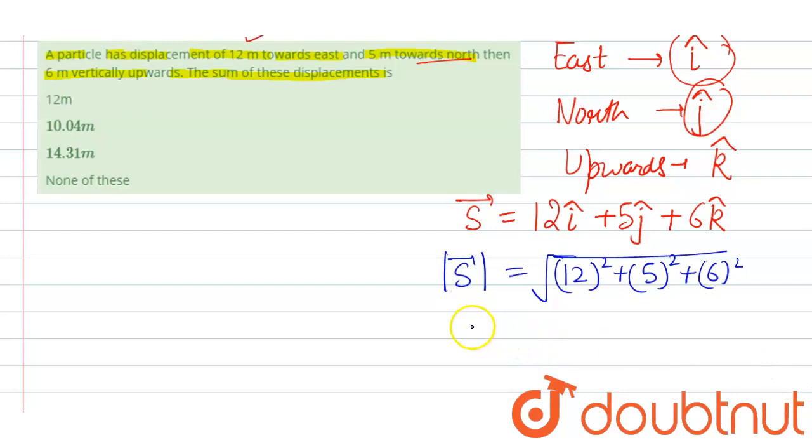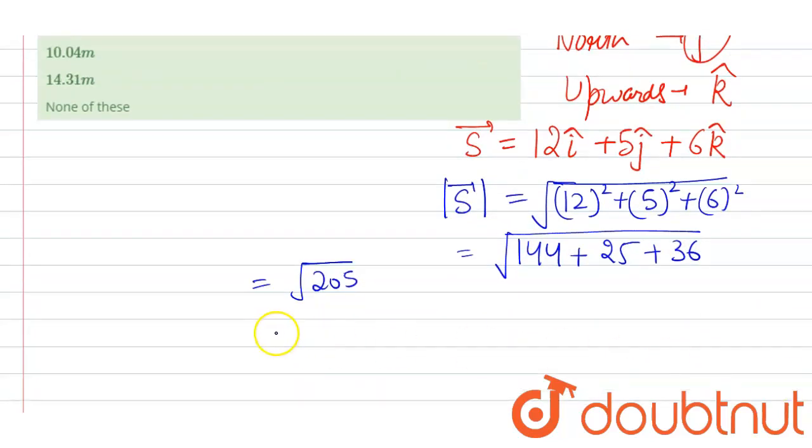That comes out to be 144 + 25 + 36. The answer will be √205, which equals 14.31 meters. That means option 3 is correct.